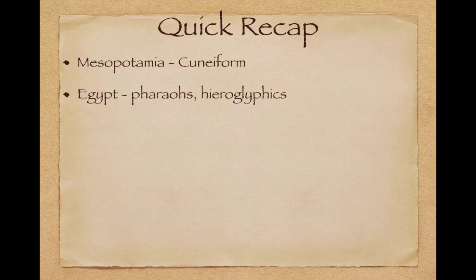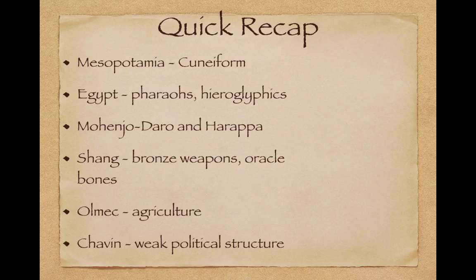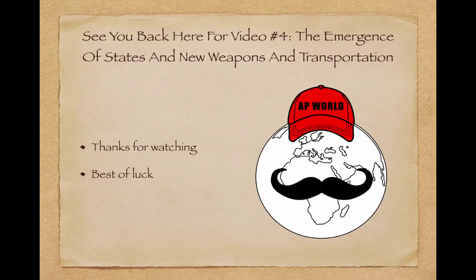Quick recap: Mesopotamia — be familiar with cuneiform. Egypt — pharaohs and hieroglyphics, covered more in video five. Mohenjo-daro and Harappa — advanced plumbing, undeciphered pictographs. The Shang — bronze weapons and oracle bones. The Olmec — agriculture and the concept of zero. The Chavin — weak political structure. Next up is video number four: the emergence of states and new weapons and transportation. Thanks for watching — best of luck this year!